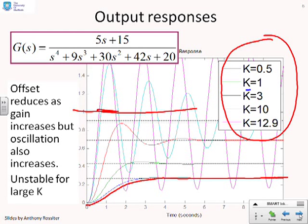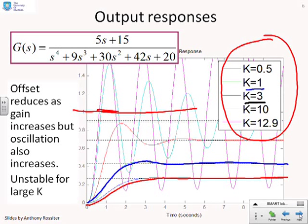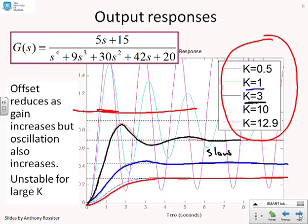If I increase the gain to K = 1, I get a slight oscillation and a better steady state gain, and it still converges at a reasonable speed. If I increase the gain further to K = 3, I'm beginning to get quite significant oscillation and overshoot. Although the steady state gain is increasing so the offset is reducing, I'm now getting a lot more oscillation, and the settling time is getting slower — so the poles are getting slower.